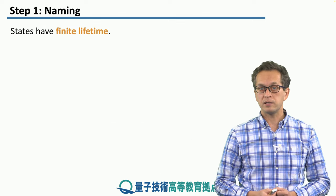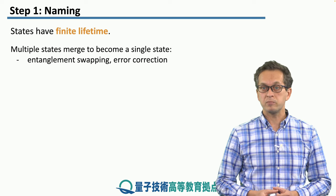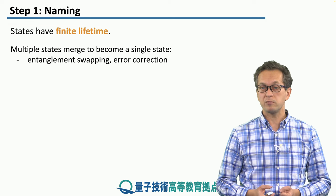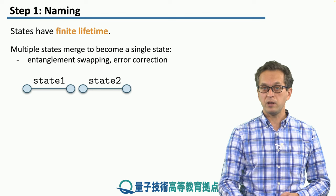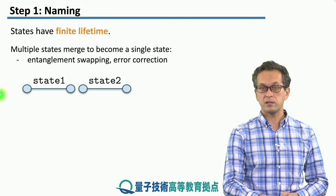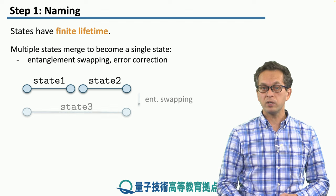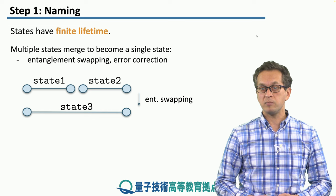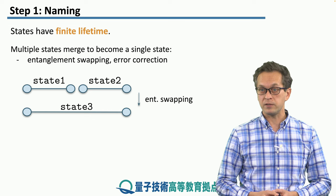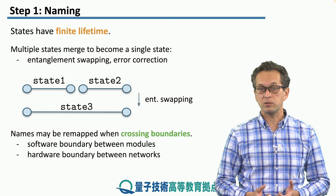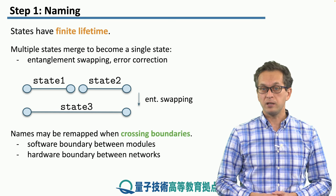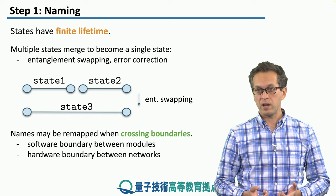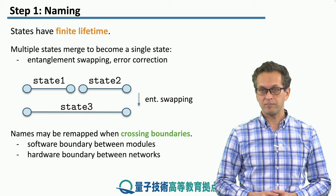Also, we have to keep in mind that states have finite lifetime. Multiple states merge to become a single state. We have seen this many times when we were talking and learning about entanglement swapping or even error correction. For example, here we have two shared bell pairs — state 1 and state 2 — and by performing entanglement swapping on the middle two qubits, we create a new state, state 3. So our naming scheme must reflect this fluidity in the quantum states. Also, names may be remapped when crossing boundaries — these may be software boundaries between modules, or there could be hardware boundaries between networks. So, as you see, naming is not that simple. This concludes our step.